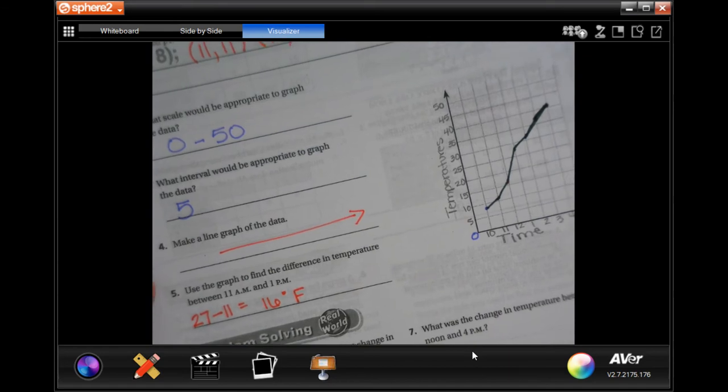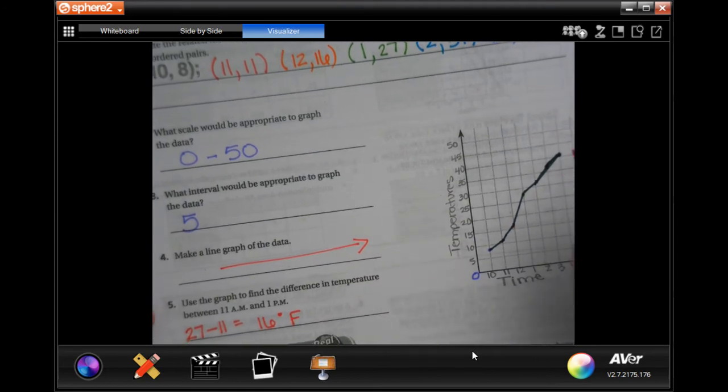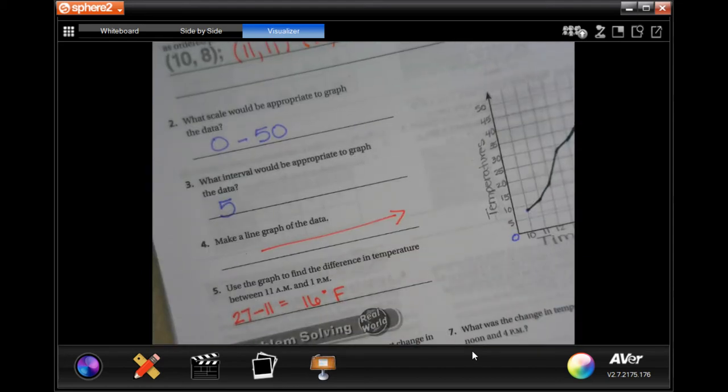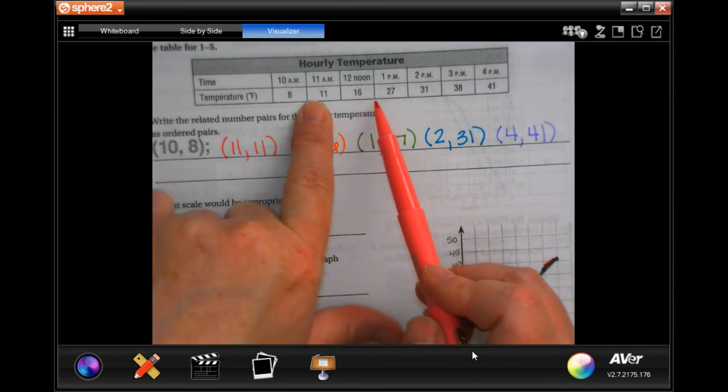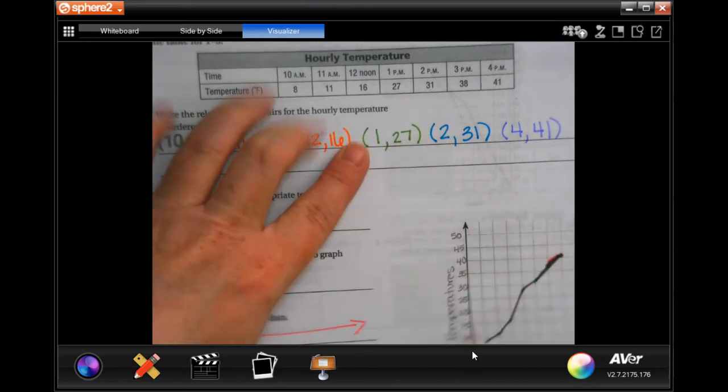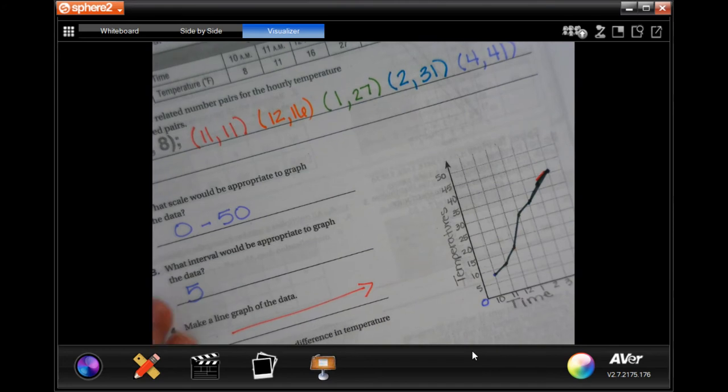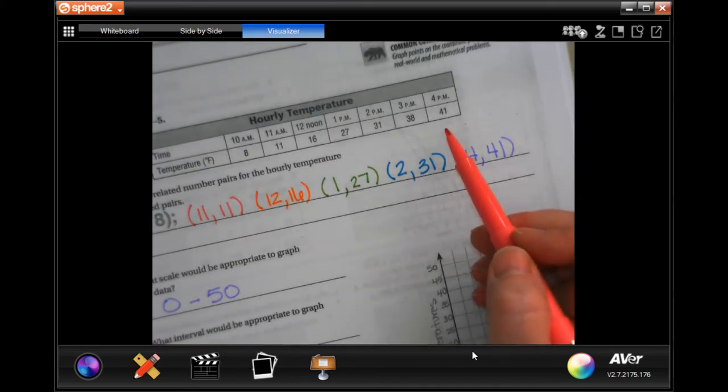Between which two hours did the least change in temperature occur? Well let's see, the 3 and 4 should really be a little more lateral, so we're going to say between 3 and 4 p.m. And actually you can do that just by looking up here. Between 10 and 11 a.m., 3 and 4 p.m., there was only a three degree difference.